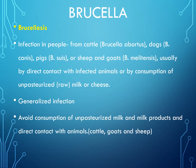Next is Brucella. Brucellosis is acquired through direct contact with infected animals or consumption of unpasteurized or raw milk and cheese. The infection is insidious, presenting with continuous or intermittent fever.